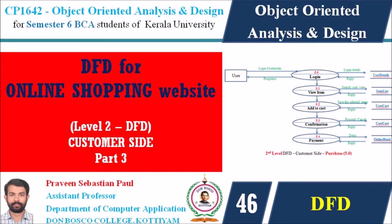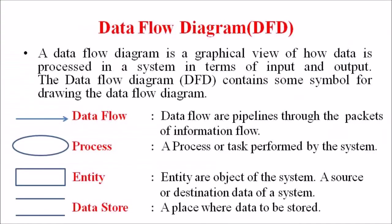As we discussed in the last lecture, a data flow diagram is a graphical view of how the data is processed in a system in terms of input and output. The data flow diagram contains symbols for representing each of these data. It basically contains 4 independent symbols: data flow, process, entity, and data store. Data flow are pipelines through which packets of information flow, and it is represented by an arrowhead.